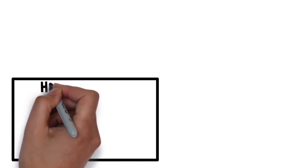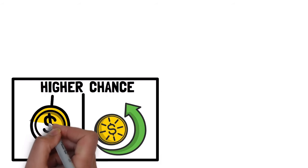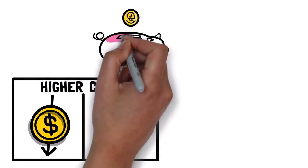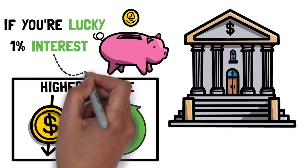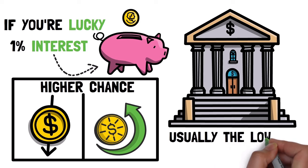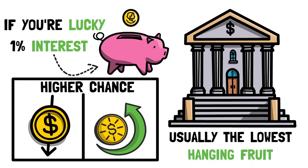Is it in the stock market? Well, this has a higher chance of growing your money, but also with high chances of loss. Perhaps it's time to create a savings account at your local bank. If you're lucky, you may earn 1% interest on your savings account. And to be frank, this is usually the lowest hanging fruit.